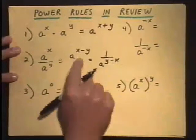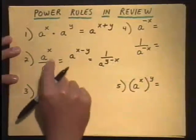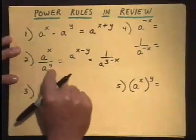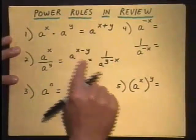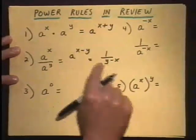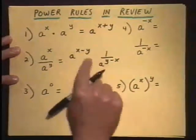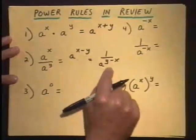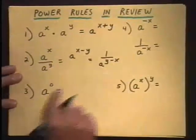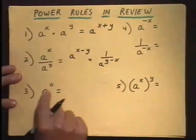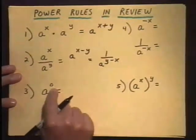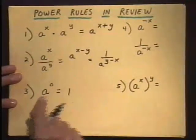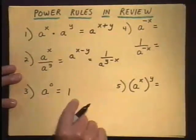It depends on which power is the higher degree. Many instructors refer to keeping those exponents positive. Power rule three: any base raised to the zero power equals the number one. So anything to the zero power is one.